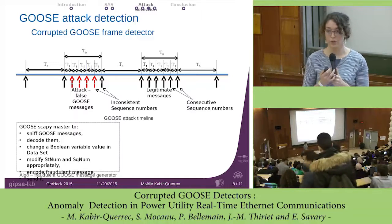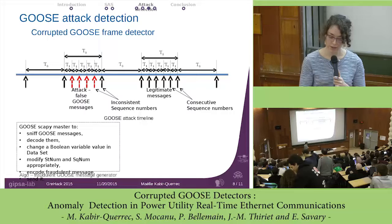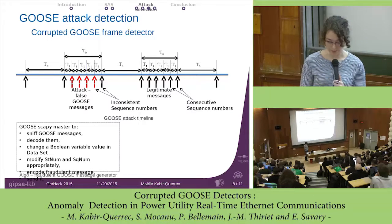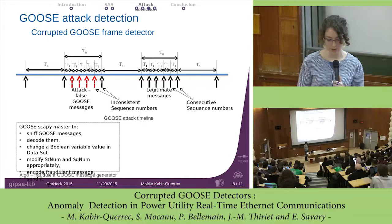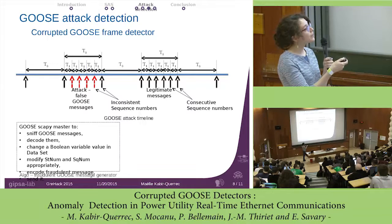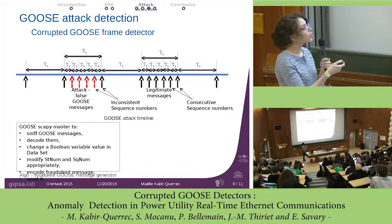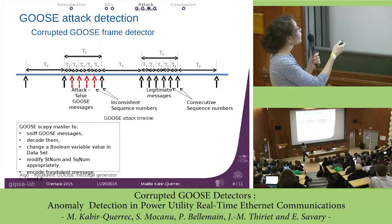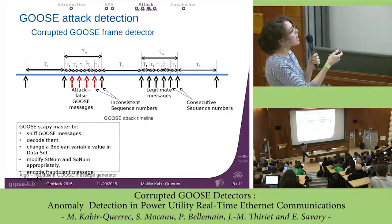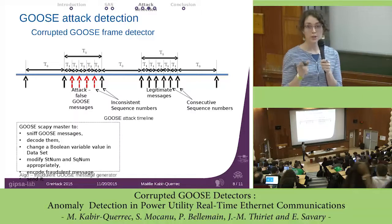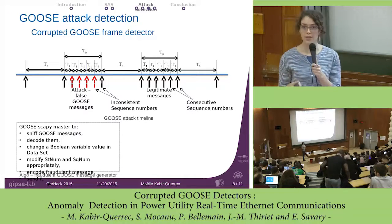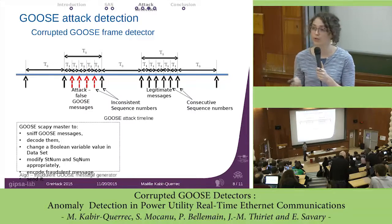This is about the detector of corrupted GOOSE messages. In a normal transmission timeline, when the system is in stable condition messages are repeated with the same content. An attacker can use a time slot between two legitimate messages to send a false GOOSE message with false content — for example, to take control of a circuit breaker or another device in the process. Even if the attacker is very precise and takes care of changing the counters in the PDU — incrementing the state number, resetting the sequence number to zero, then incrementing it — when the next legitimate message arrives, it will be detected because there will be inconsistent sequence numbers.